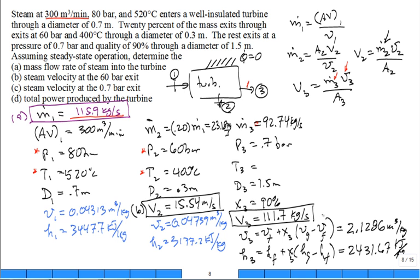And so we get the exit speed at 3 is equal to 111.7 meters per second. It's a lot faster, isn't it? I mean, yeah, meters per second. A lot faster, isn't it? The next part, part D, what is the total power produced by the turbine?